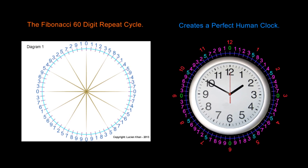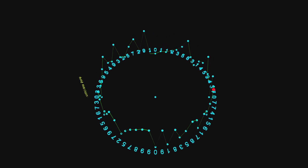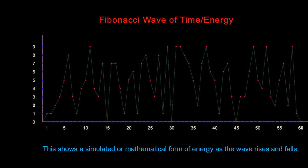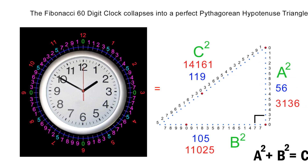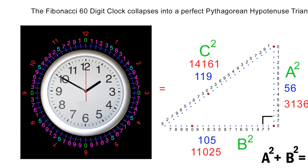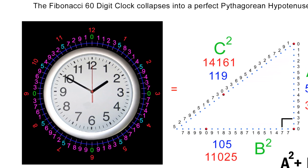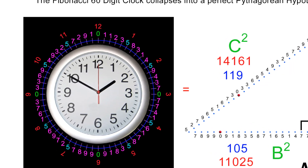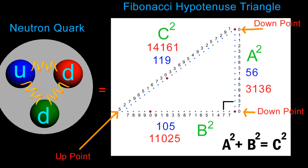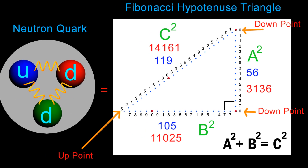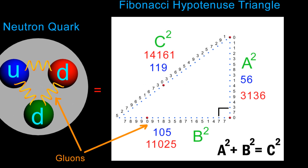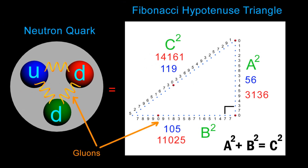Going back to our Fibonacci 60-digit clock: in the last video, I showed you how this circle of information is actually a wave of mathematical information that has an intrinsic virtual electromagnetic energy encoded into it. In part 9 of this series, we saw that this Fibonacci 60-digit circle or wave of information can collapse into a perfect Pythagorean 90-degree hypotenuse triangle in which a squared plus b squared is equal to c squared. The mathematical probability of this being random is too astronomical to comprehend. I propose that this Fibonacci hypotenuse triangle is the mathematical equivalent of what science calls a neutron. It has three nodes or endpoints which are mathematically compatible to the three quarks found in a neutron.